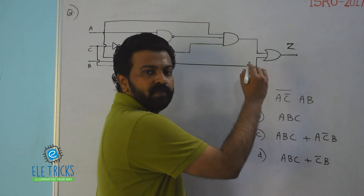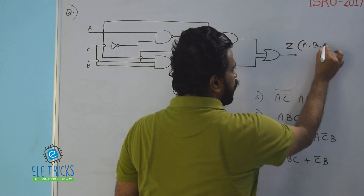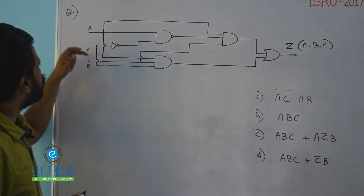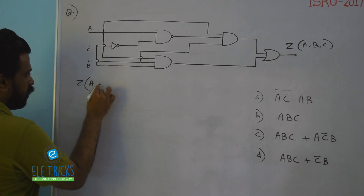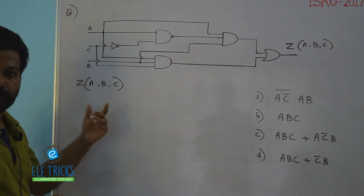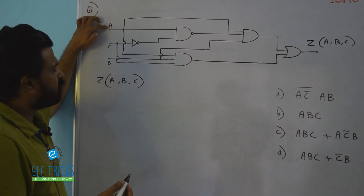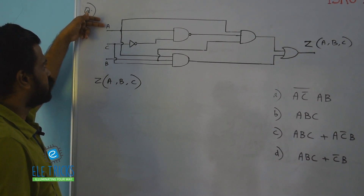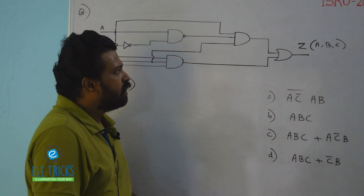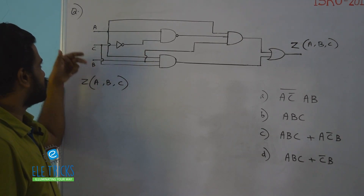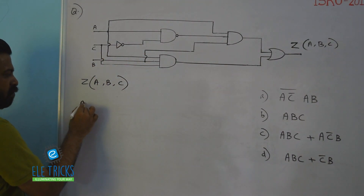We'll solve this using Shannon's expansion. Z is a function of the input variables A, B, and C. By Shannon's expansion, Z(a, b, c) can be expanded by taking any variable outside. For this problem I'm taking variable A outside, and I'll explain why it's advantageous to do so. You can take B or C, and you'll still get the same answer, but you won't get the same reduction in steps.